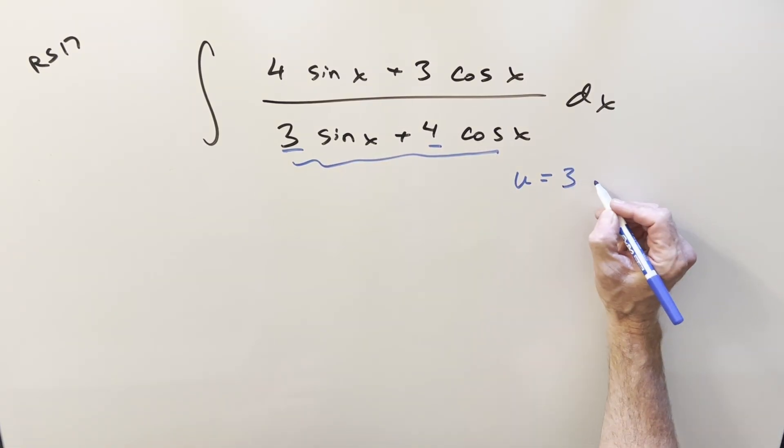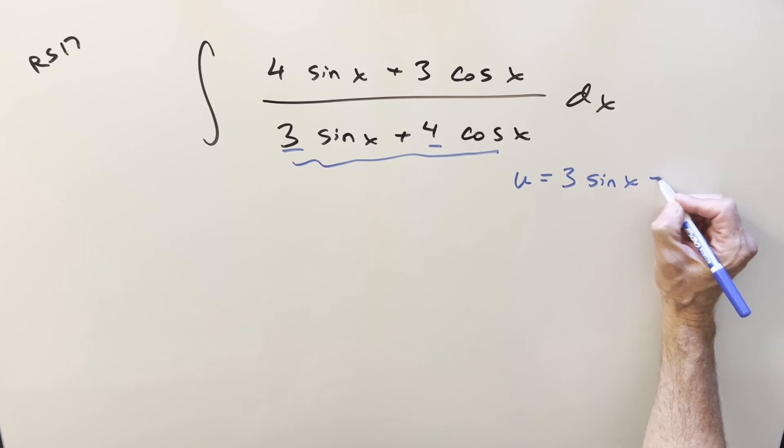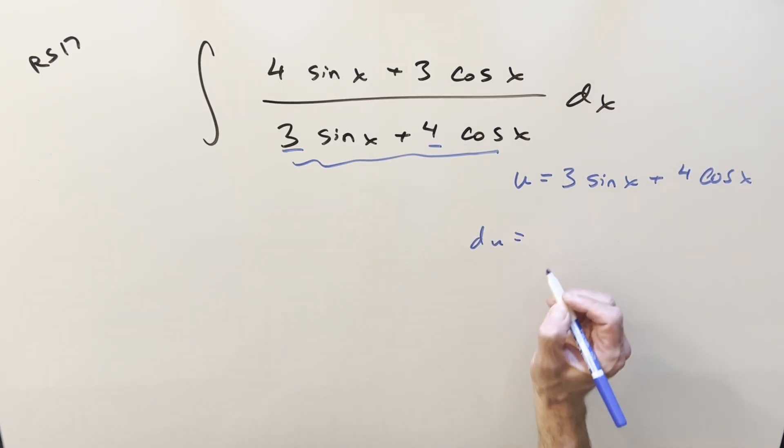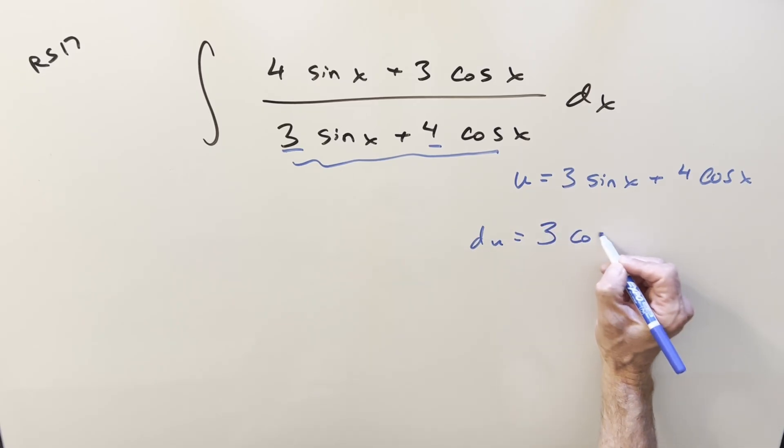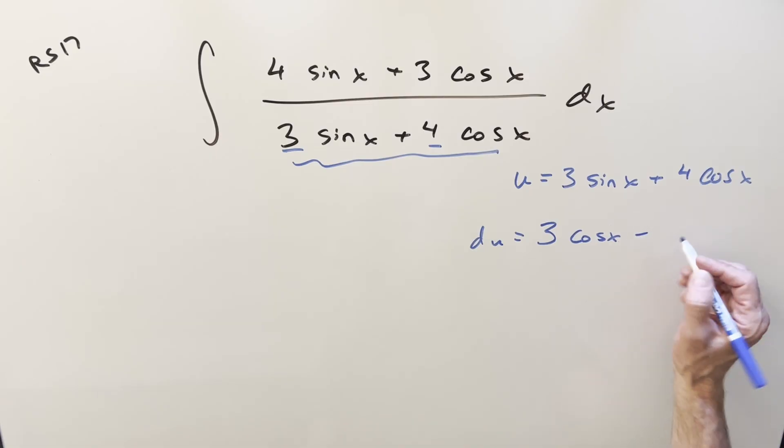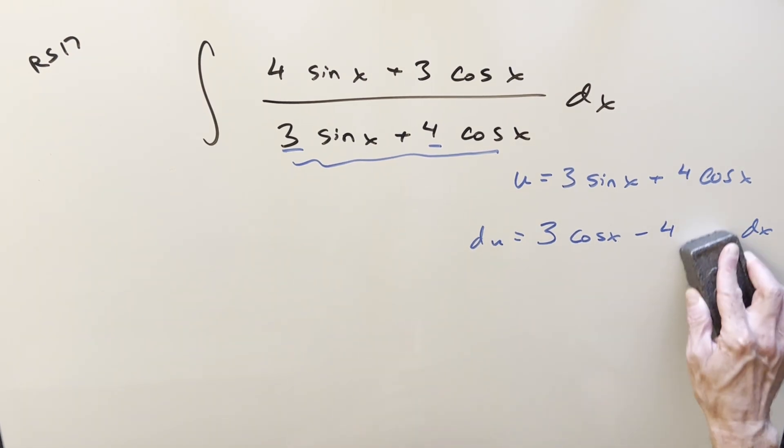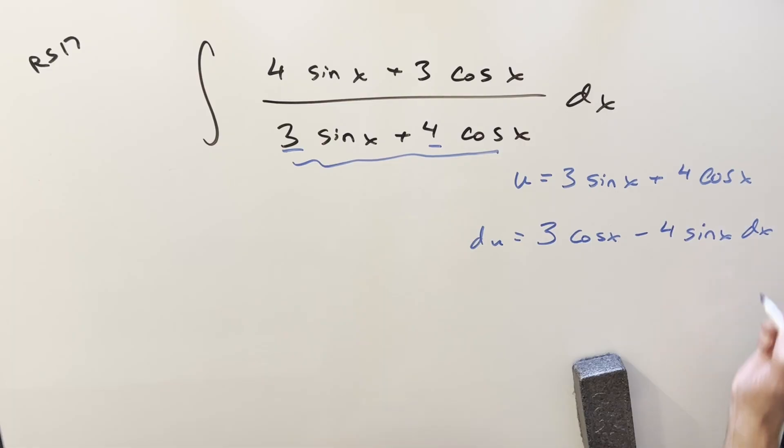So we'll set u equal to 3 sine x plus 4 cosine x. We'll take a derivative and see what happens. So then derivative here is going to be 3 cosine x. The derivative here, we have a minus sign coming out. So we have minus 4 sine x dx.